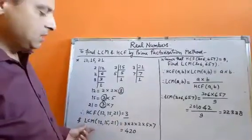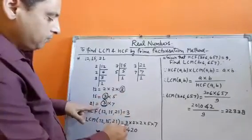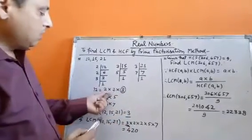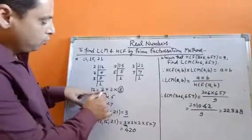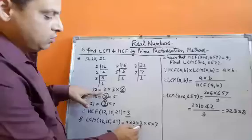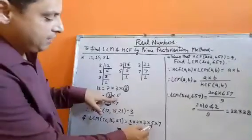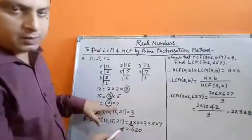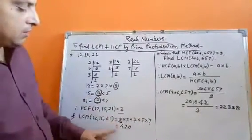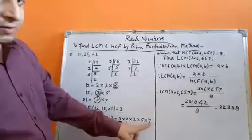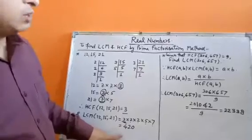Next, the LCM. The common number is 3. The maximum number of times 2 appears is 2, so we write 2 × 2. Maximum number of times 5 appears is 1. Maximum number of times 7 appears is 1. Then we multiply: 3 × 2 × 2 × 5 × 7 = 420. So the LCM of these numbers will be 420.